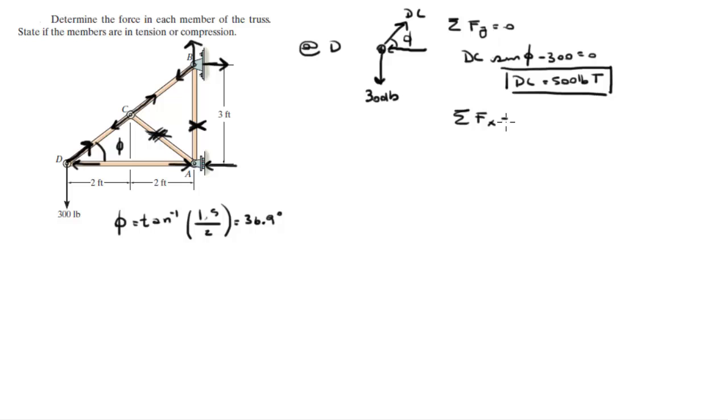You know that the sum of the forces in the X is equal to zero. So, you know that DC, cosine of 36.9 degrees minus DA is equal to zero.